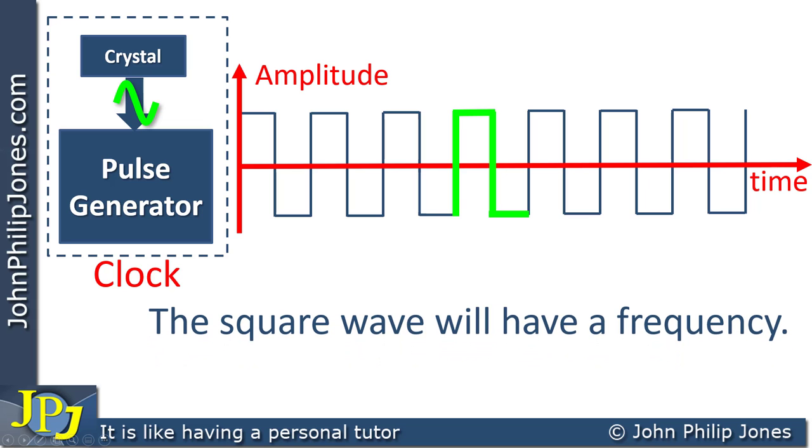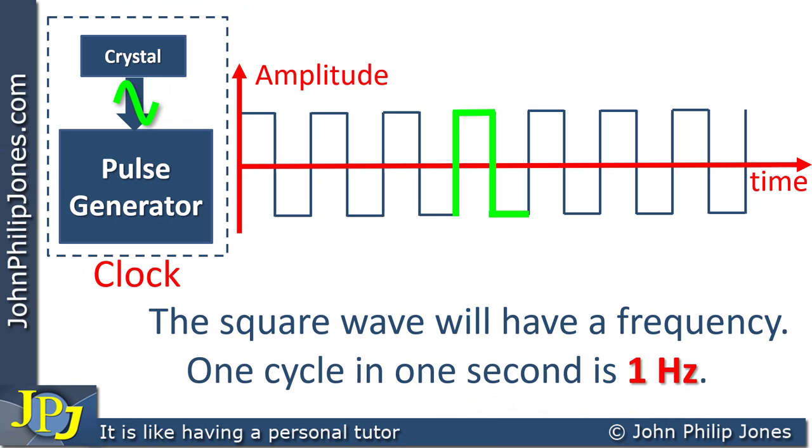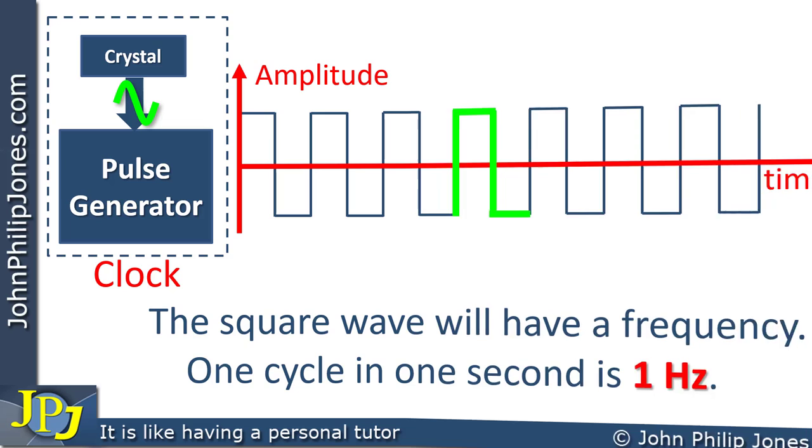The square wave will have a frequency in the same way that a sinusoidal waveform had a frequency. One cycle in one second for a square wave is also one hertz. Ten cycles per second is a 10 hertz square wave. A million cycles per second of a square wave is one megahertz.